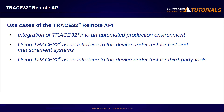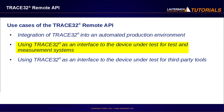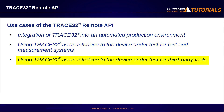Typical use cases of the Trace32 Remote API are: integration of Trace32 into an automated production environment, using Trace32 as an interface to the device under test for test and measurement systems, and using Trace32 as an interface for third-party tools. An important goal of Lauterbach is to have open interfaces so that special-purpose tools from third-party manufacturers can easily interact with the Trace32 tools. The Trace32 Remote API offers third-party vendors the potential to control Trace32.